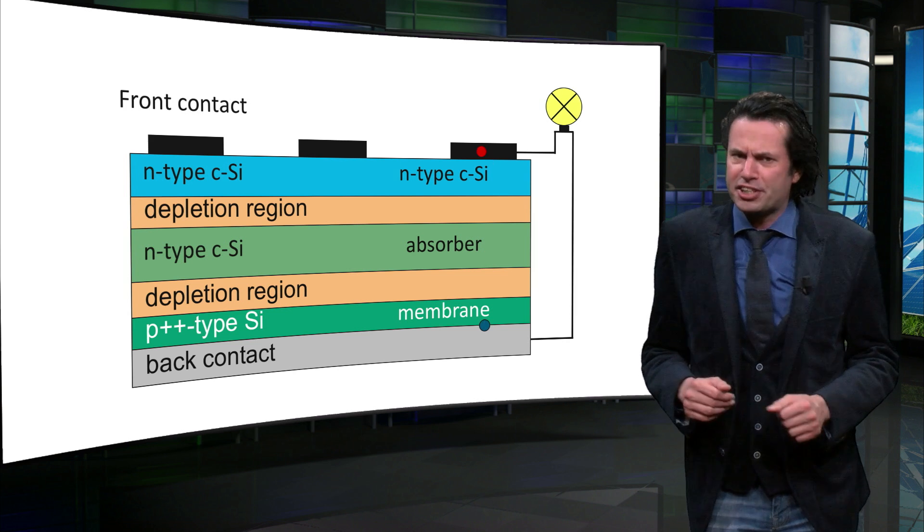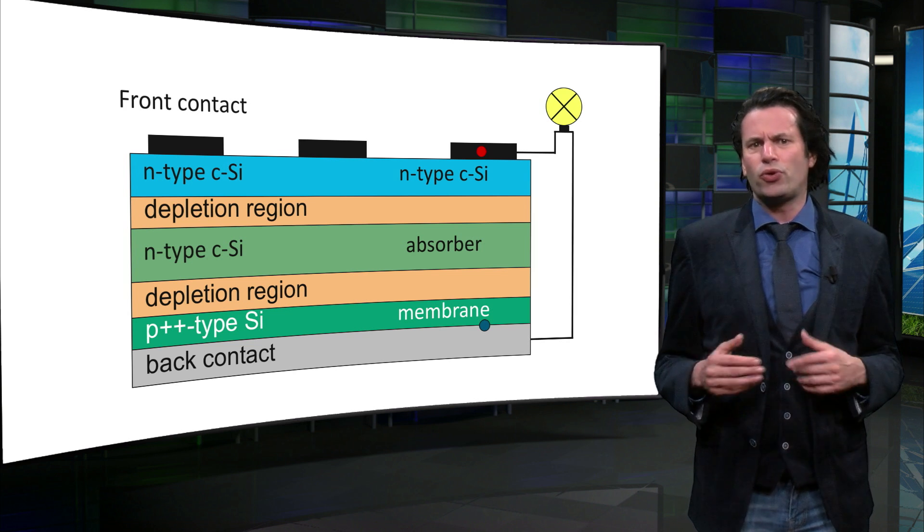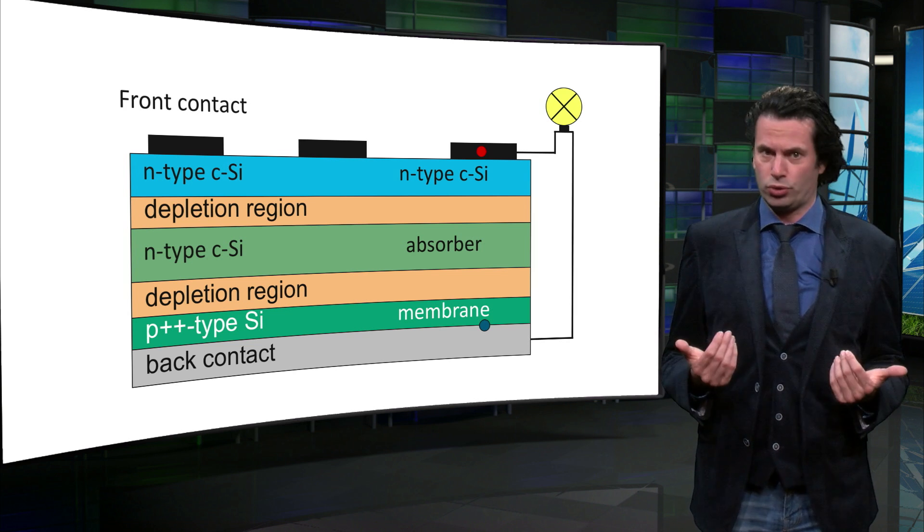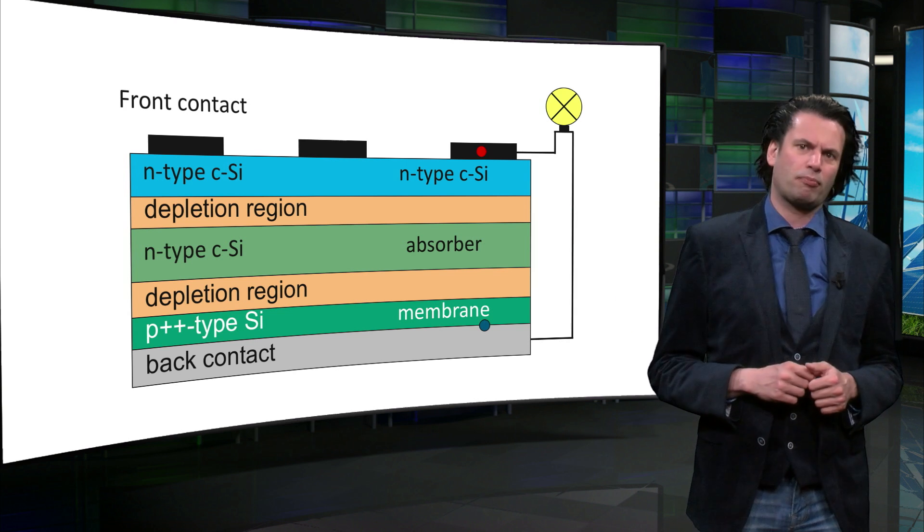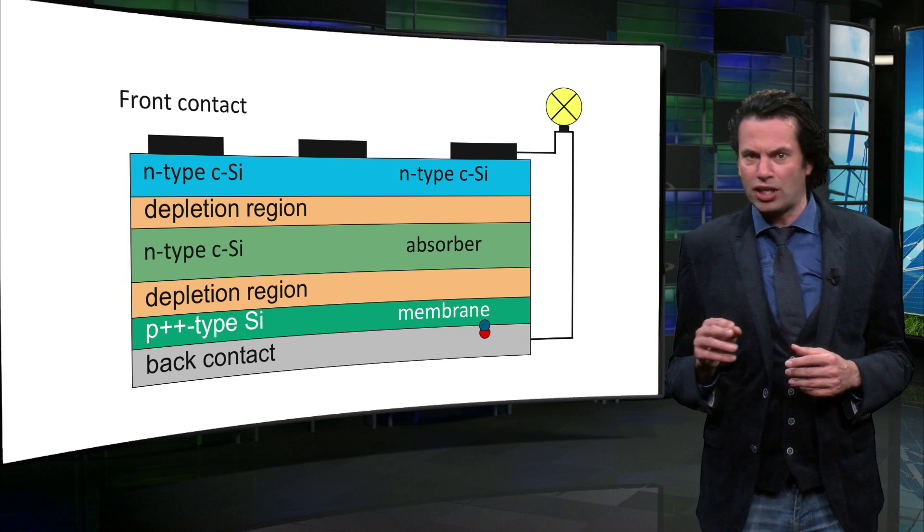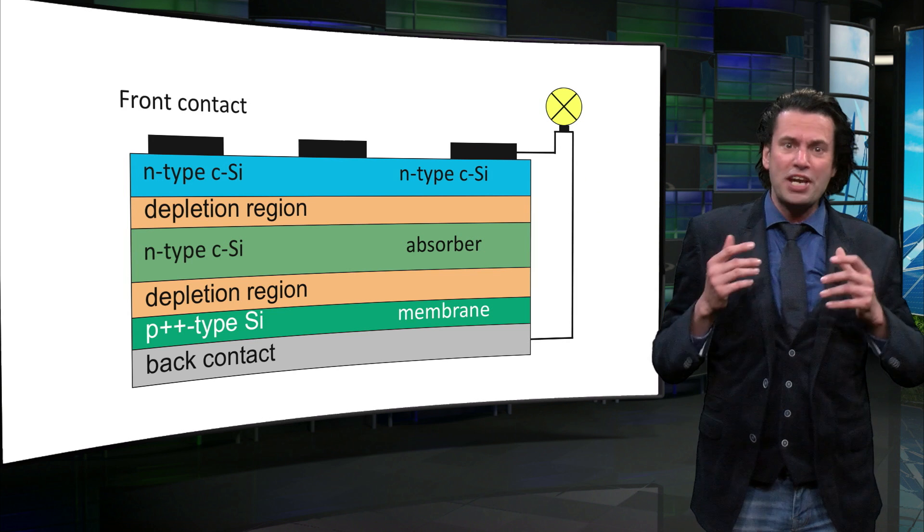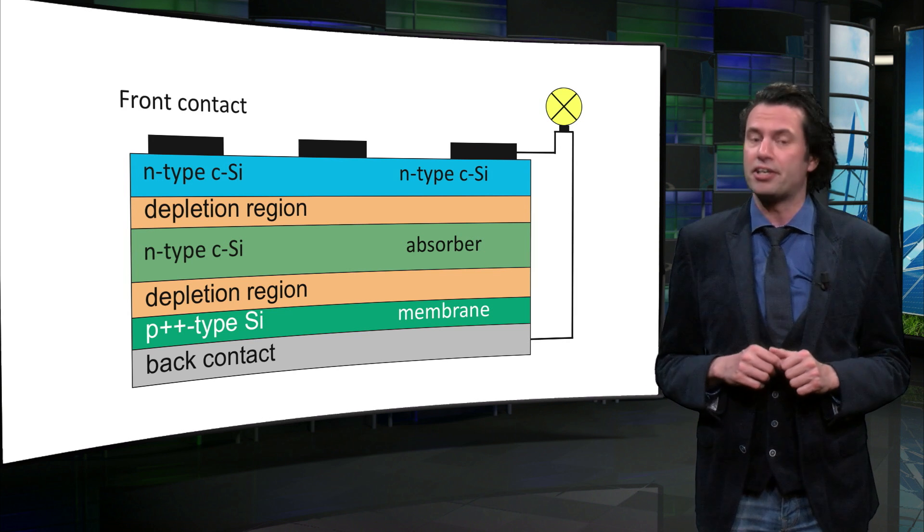Then the charge carriers have to be collected at the contacts. In this example, the contacts are connected with a load, in this case a lamp. The electron will move through the load and back to the solar cell. Both charge carriers, the electron and hole, recombine at the metal P layer interface.